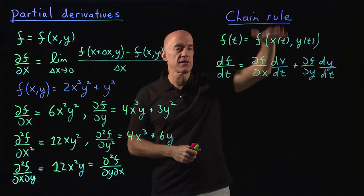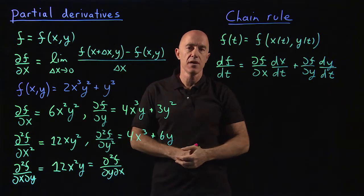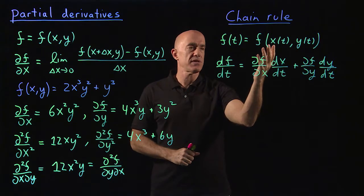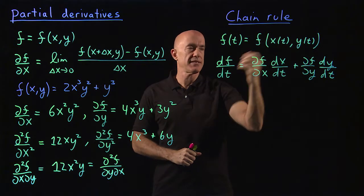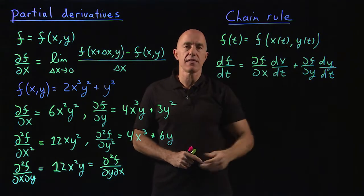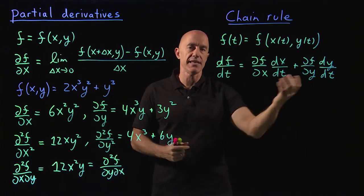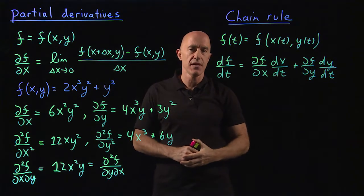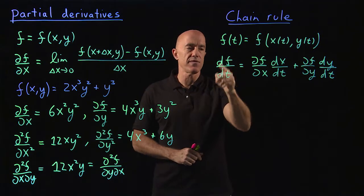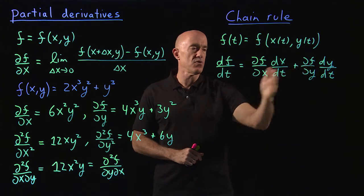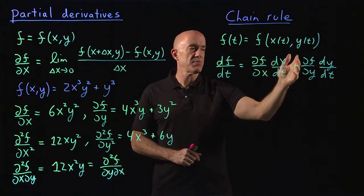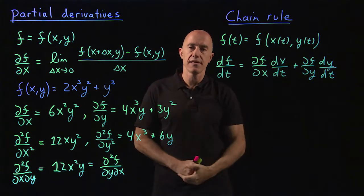Another thing you sometimes need is the chain rule for functions of more than one variable. Here, I have a function of x and y, but x and y themselves are functions of t. Sometimes x and y are position and t is time. We want to find the time derivative of f using the chain rule: partial f with respect to x times dx/dt, plus partial f with respect to y times dy/dt.